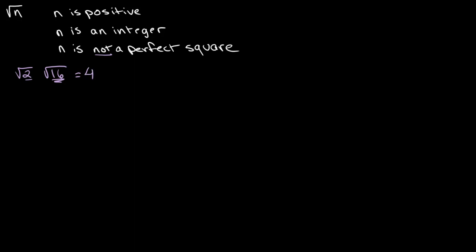Similarly, we cannot say that the square root of negative 2 is a surd because we cannot take the square root of negative numbers. Now that we have a basic understanding of what a surd is, I'm going to go over the different operations that can be performed involving surds.